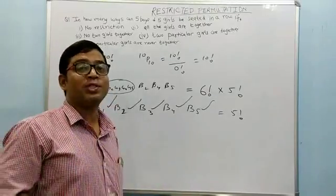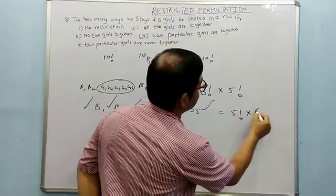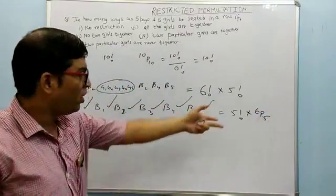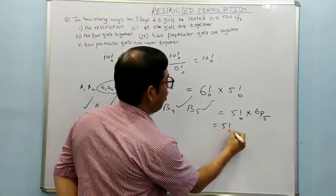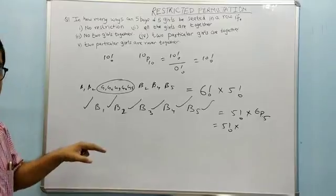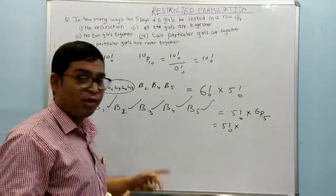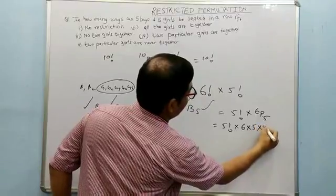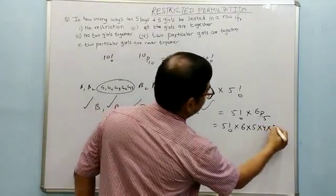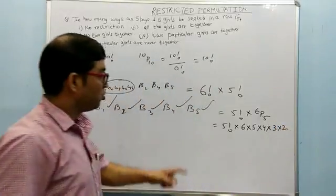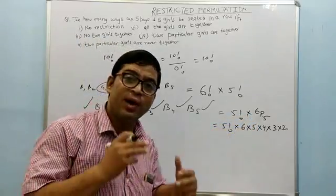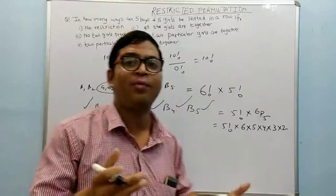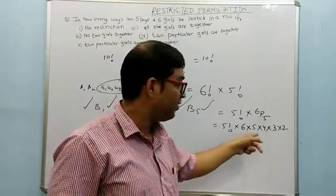There are six places where we have to seat five girls, which can be done in 6P5 ways. If you don't want to use permutation notation, apply the basic fundamental principle of counting: the first girl has 6 choices, the second girl has 5, the third has 4, the fourth has 3, and the fifth has 2. So the total is 6 × 5 × 4 × 3 × 2, which equals 6P5. Six options exist for placing the five girls so no two are together.